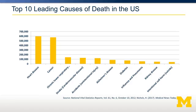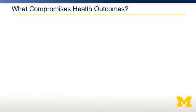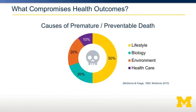Subgroup analysis by race and gender shows similar findings. However, if we consider factors that determine health outcomes in Figure 2, we see that lifestyle is the greatest explanatory category. What we do accounts for 50% of our health status. Where we live from an environmental perspective matters, as well as biology, to account for an additional 40%. That leaves only 10% for health care.